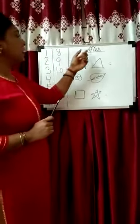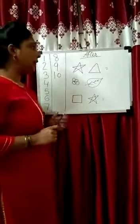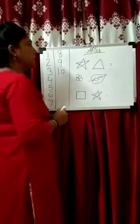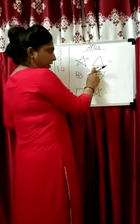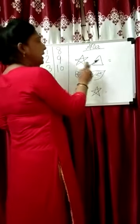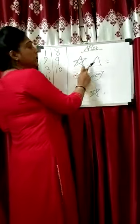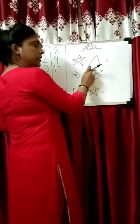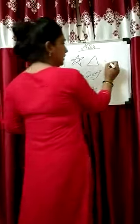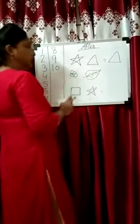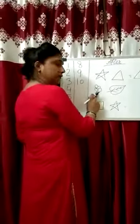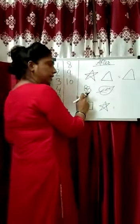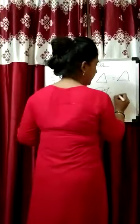Okay kids, now let's start our new concept — after. Here are some pictures. The first picture is a star and a triangle. Triangle is after star. So the answer is triangle. Next is a flower and a leaf. Leaf is after flower. So the answer is leaf.